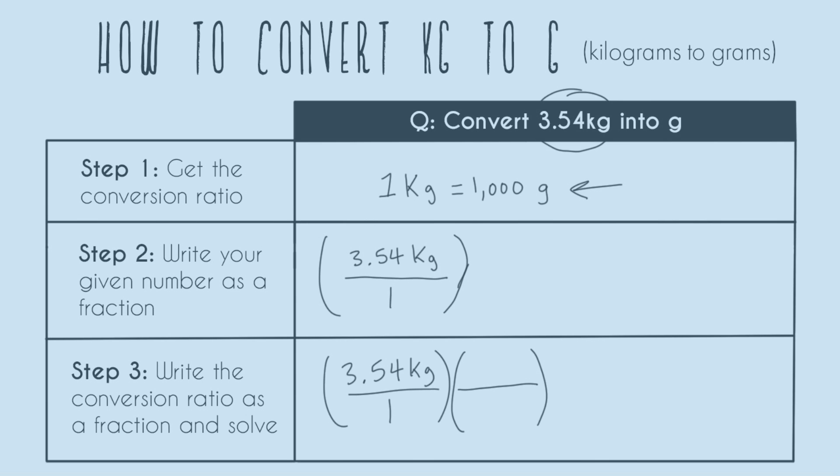So in this case kilograms is already on the numerator of the 3.54, so we've got to put our kilograms from our conversion ratio down here. That's going to allow the cancellation to happen, and that means if kilograms is on the denominator then grams is on the numerator.